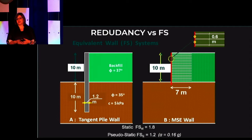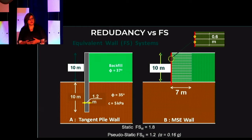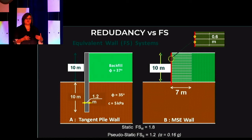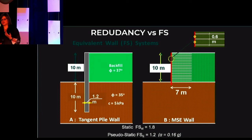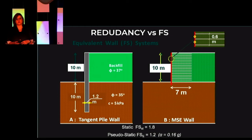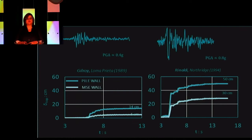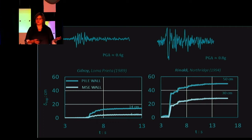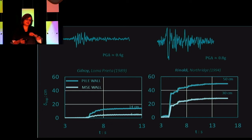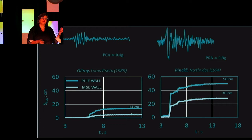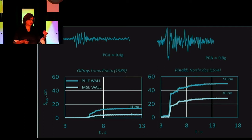My example here is two retaining walls that in terms of factor of safety are identical — they retain the exact same type of granular sand soil. Both are 10 meters high. On the left is a conventional tangent pile wall; the other is an MSE wall — a mechanically stabilized earth wall. They have the same factor of safety of 1.8 for static conditions and the same factor of safety for seismic with an acceleration coefficient of 0.16. We put them to test analytically with two different earthquakes: the Loma Prieta 1989 earthquake and the Rinaldi record of the Northridge earthquake. What you see is the displacement at the top of each wall.